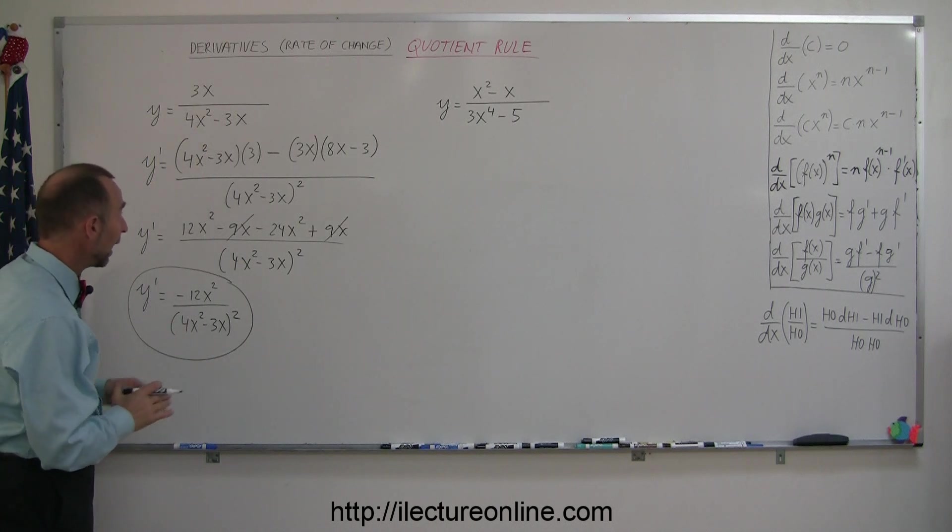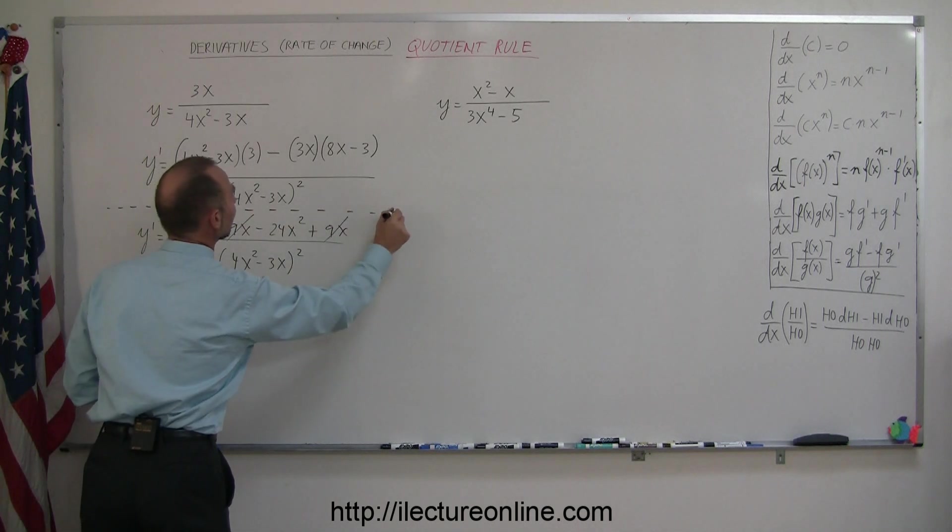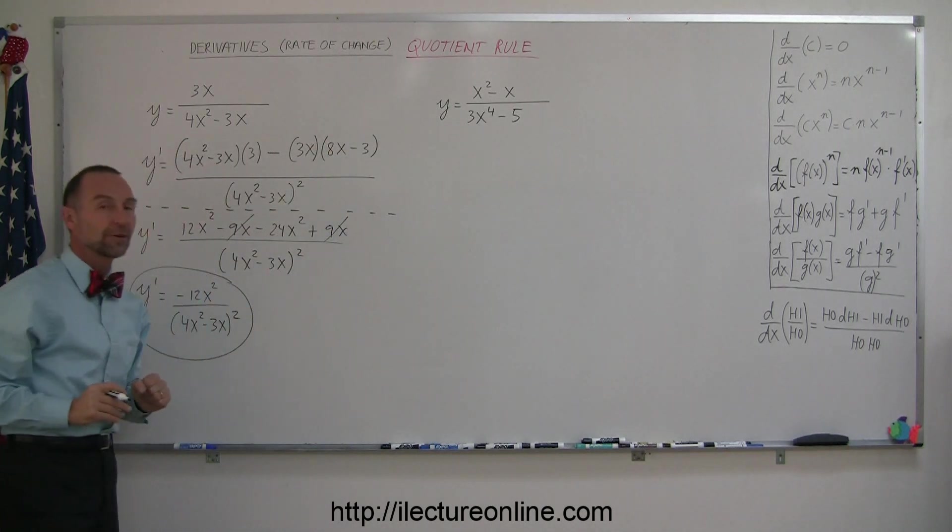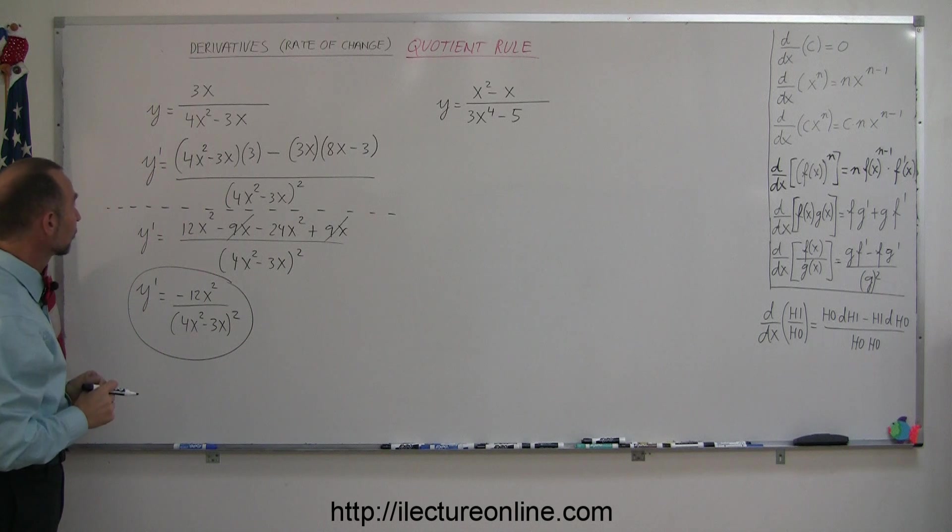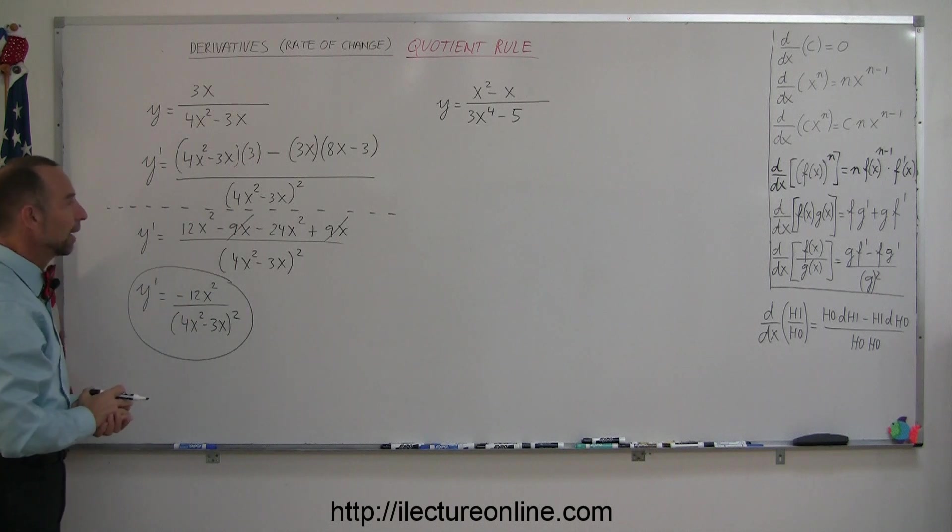I feel that if you get it to this stage right here you basically have taken the derivative of the quotient of functions. But if you want to keep going and get the final simplified answer then you must multiply that out and do that.